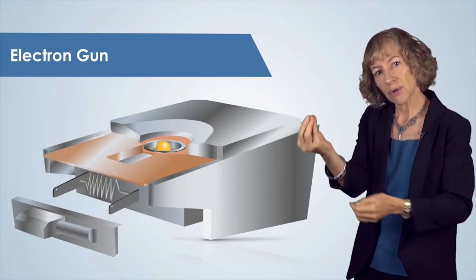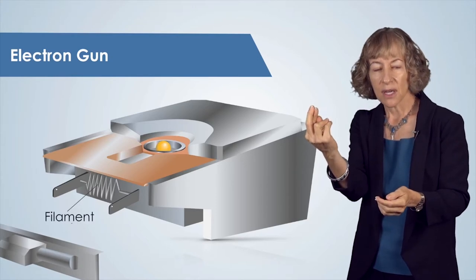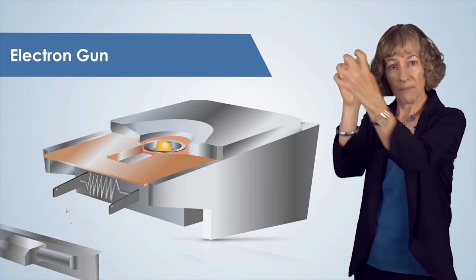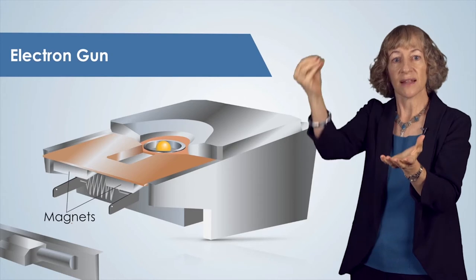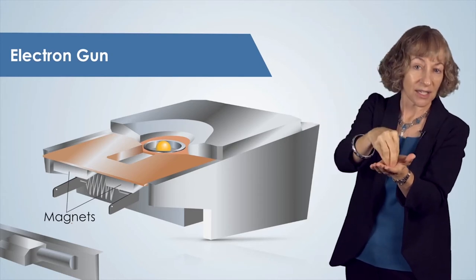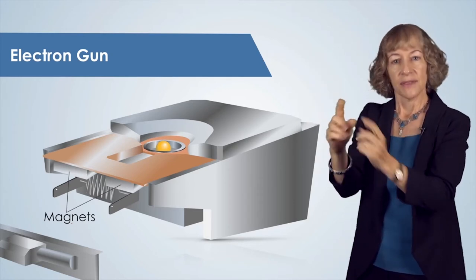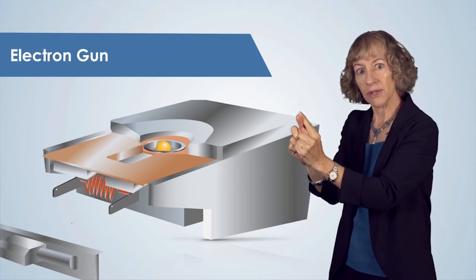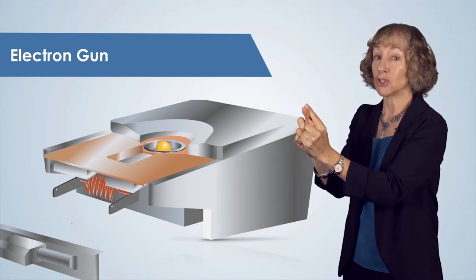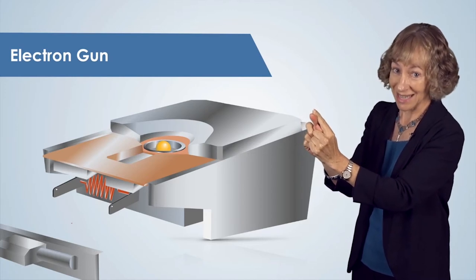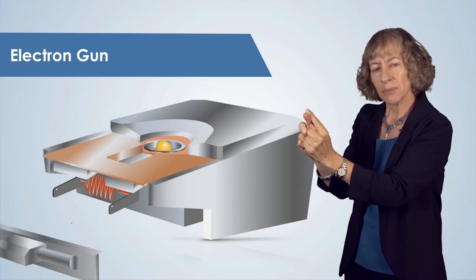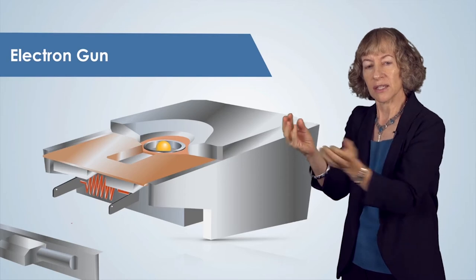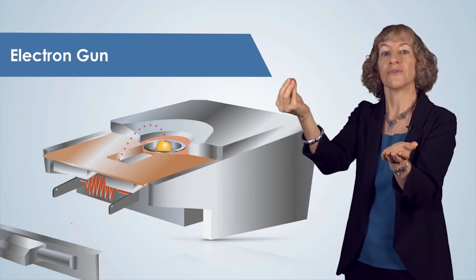Contained within that electron gun is a filament, the source of the electrons, and magnets for focusing that electron beam and directing it toward the crucible. The electron beam is generated by heating the metal filament to the point that it glows bright, about 2,500 degrees centigrade. At this temperature, electrons are so energetic that some of them leave the surface of the filament.